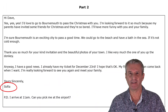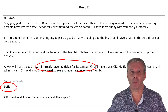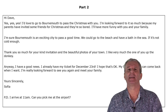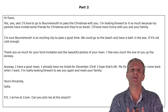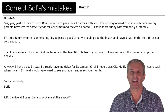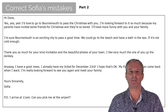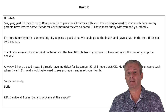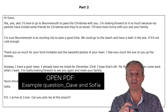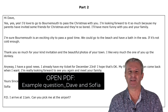Sophia has replied to Dave and accepted his invitation — she's already bought a ticket. But she has made 15 mistakes in her email. Can you find her mistakes? Pause the video, correct Sophia's mistakes, and write the email again in your notebook or in a text document on your computer. If you want to print this email, you'll find it in the support file — the PDF is called 'Example Question, Dave and Sophia.'